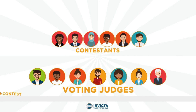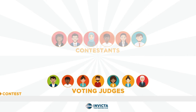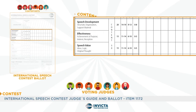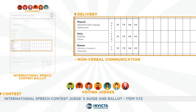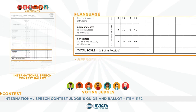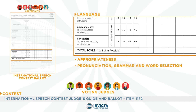During the contest, the voting judges must listen to the contest speeches, paying attention to the following. In terms of content: the structure and organization, the effectiveness, and support material. When it comes to delivery: the nonverbal communication, the vocal variety and quality, and assurance and enthusiasm. Finally, for language: the appropriateness for the speaker's purpose and audience, and pronunciation, grammar, and word selection.